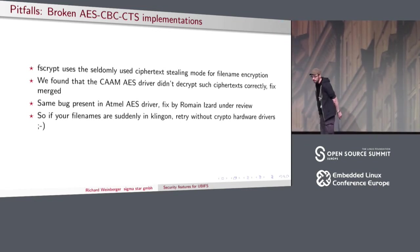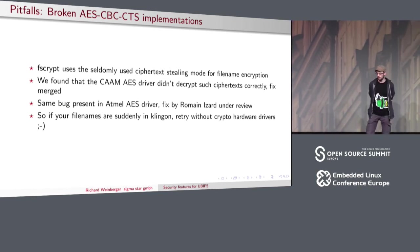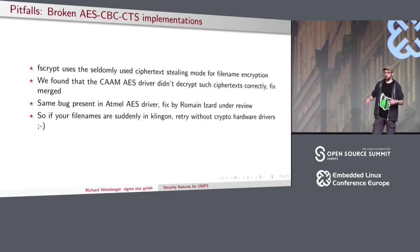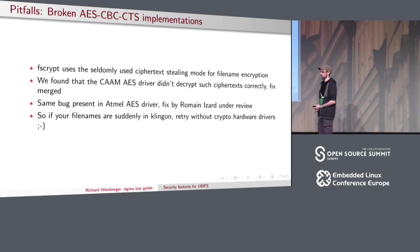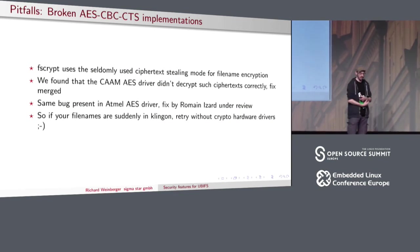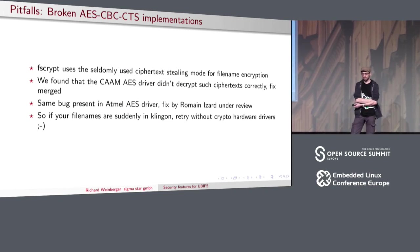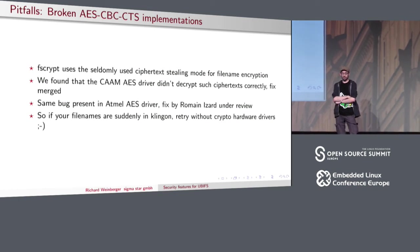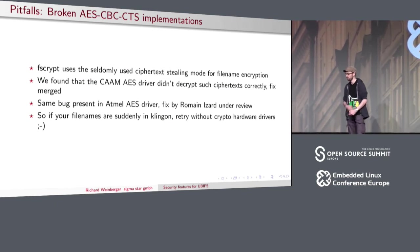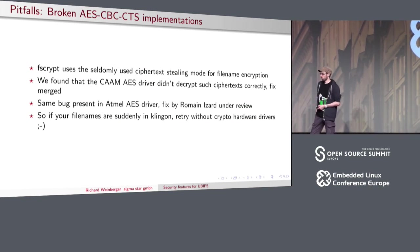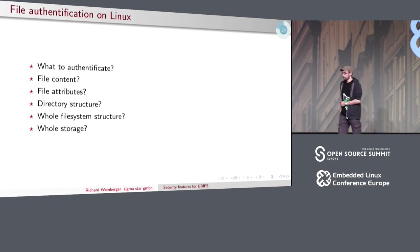There is another problem with file name encryption. FSCrypt uses ciphertext stealing mode — a special AES mode where the result is always the same length as the input, so we don't need to pad to the next block size. This mode is uncommon and not often used. We found that the CAAM driver had a bug where it didn't work correctly — that was fixed. Two weeks ago someone reported that UBIFS encryption didn't work on their platform; they were using the Atmel crypto offloader, which had the same bug. So if file names suddenly appear in garbled form, retry without the hardware offloaders. I suspect many more drivers are broken.